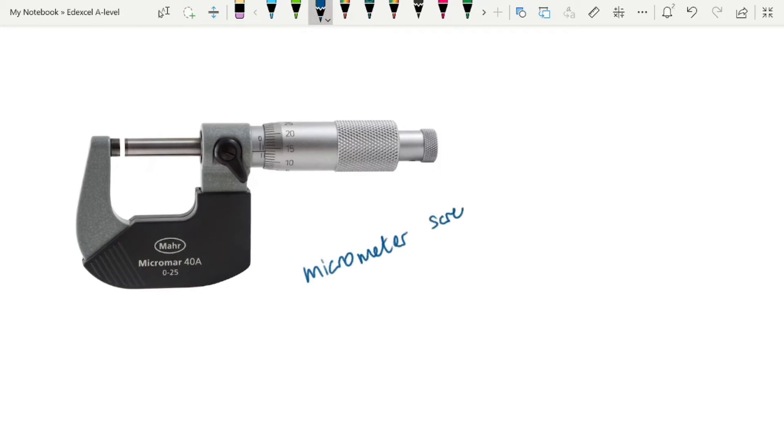Or it's perfectly acceptable to just call it a micrometer in an exam situation. And the micrometer measures from 0 to 25 millimeters. So again, you are restricted to the size of the object that you can measure with this. But it does give you a resolution of 0.01 millimeters.